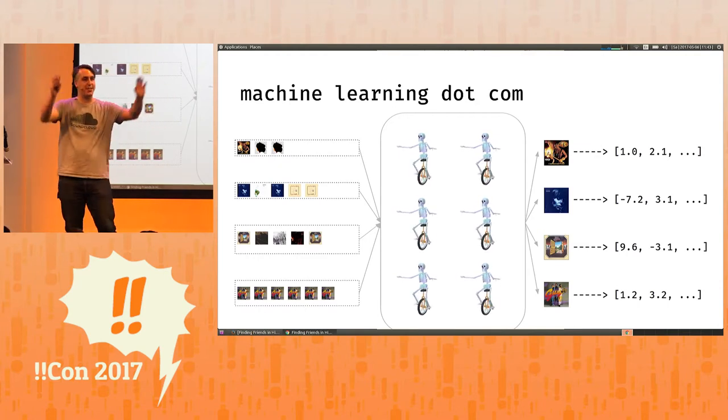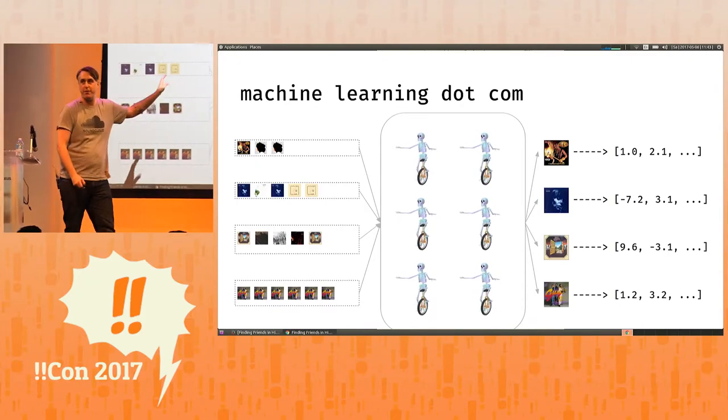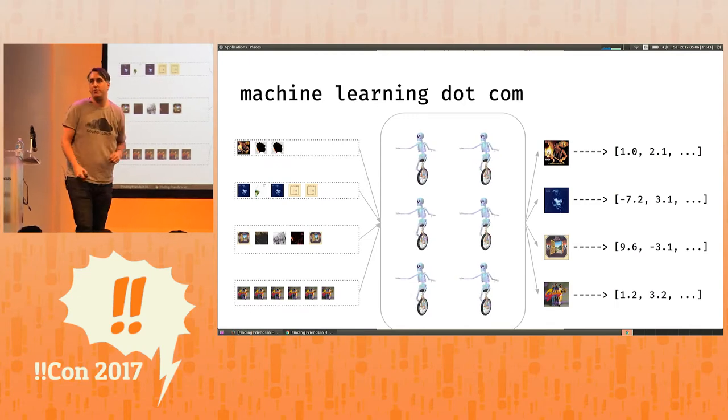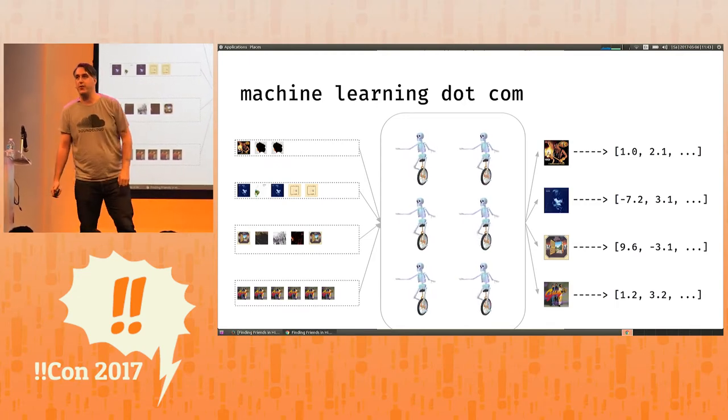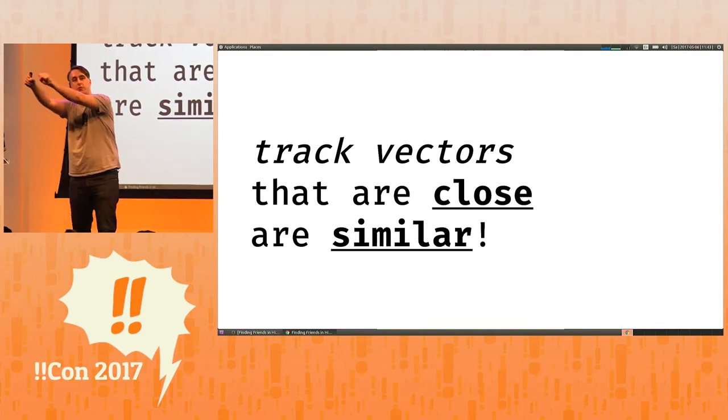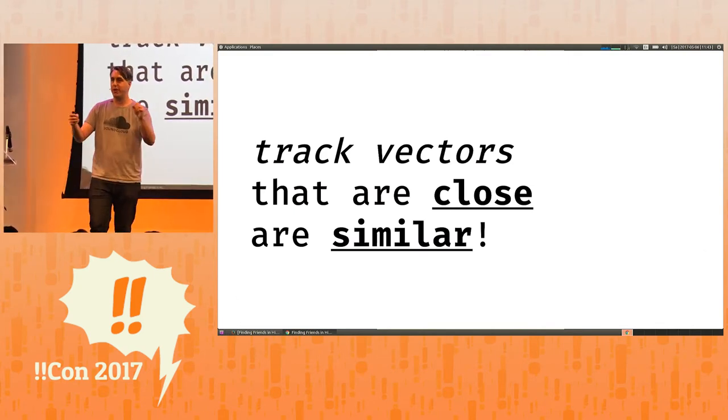Many machine learning algorithms take sequences of things and produce vectors for those things. Here is the real live SoundCloud recommendation algorithm, taking sequences of user histories and producing for each track a vector. Now, these algorithms do this in such a way that track vectors that are close to each other in this space happen to also be similar. And we use this to build recommendations.